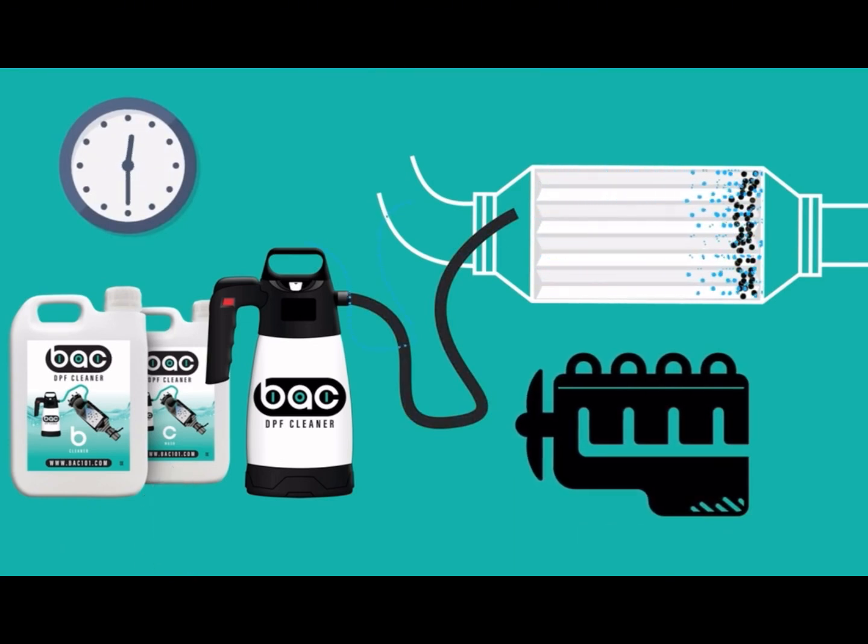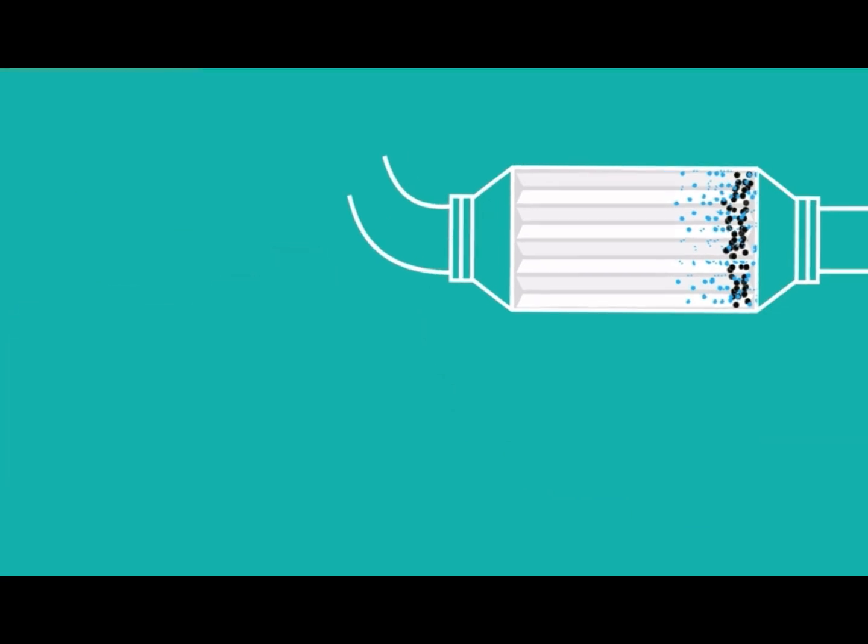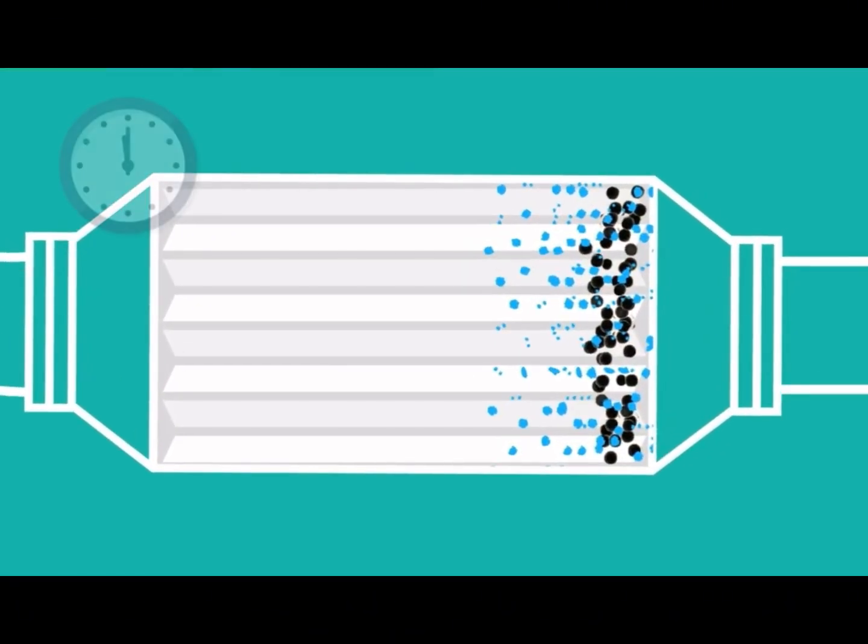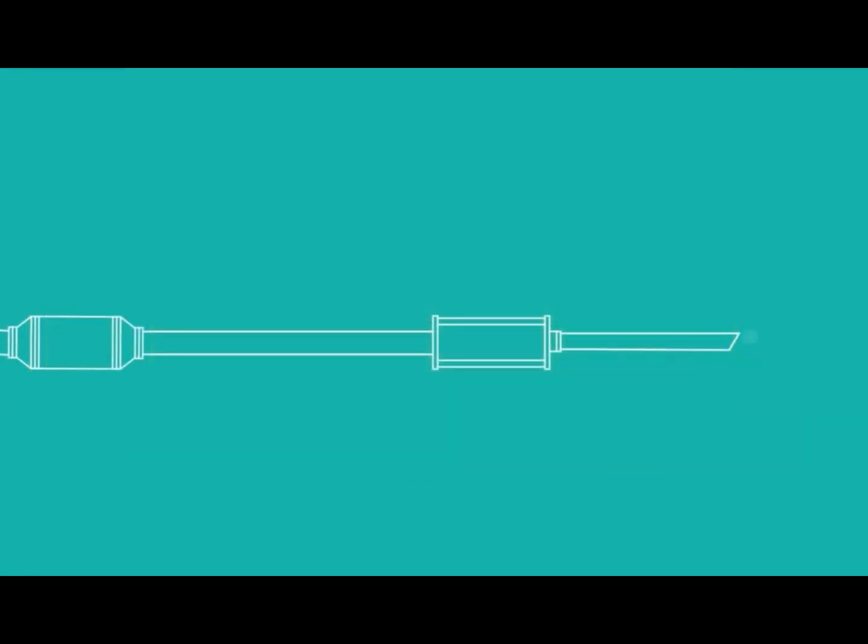Wait a further 15 minutes and then run the engine again at 2,500 rpm for a final 15 minutes. That's it. You will notice deposits exiting the exhaust system for the first 10 to 15 minutes, as the oil, grease, soot and ash are expelled from the DPF. This is completely normal.